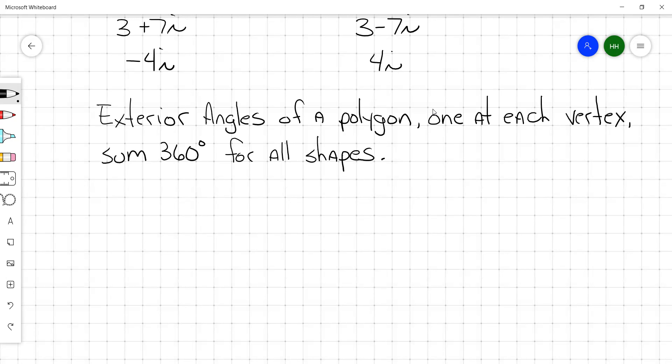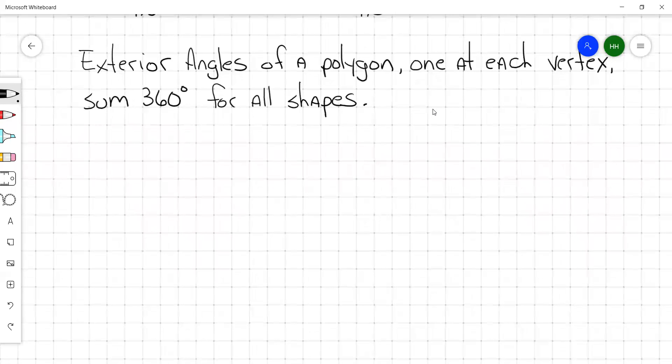It doesn't matter what the polygon is. Three sides all the way through infinite number of sides. The exterior angles, one at each vertex, sum 360 degrees. We talked about exterior angles earlier this year.